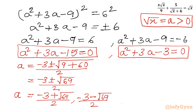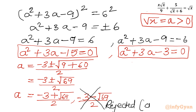Now a will always be positive, so we reject the negative value (minus 3 minus √69 over 2) for real values of x. Only the positive value (minus 3 plus √69 over 2) is accepted.